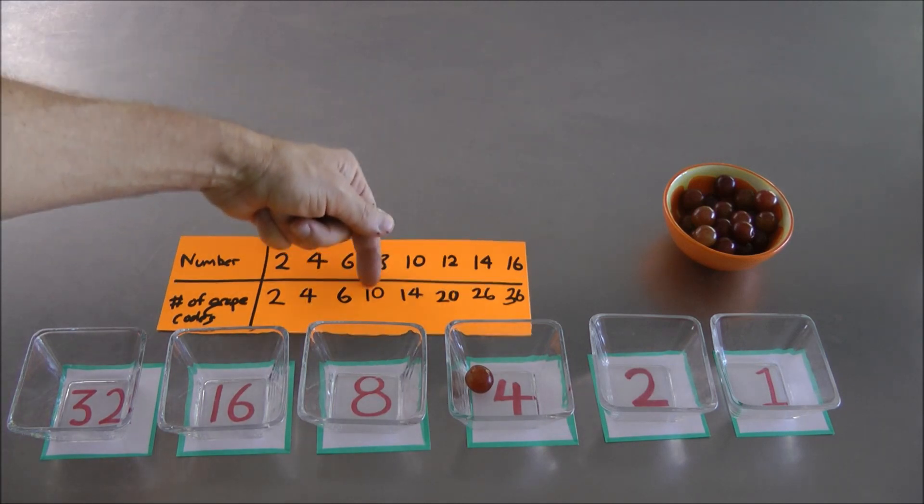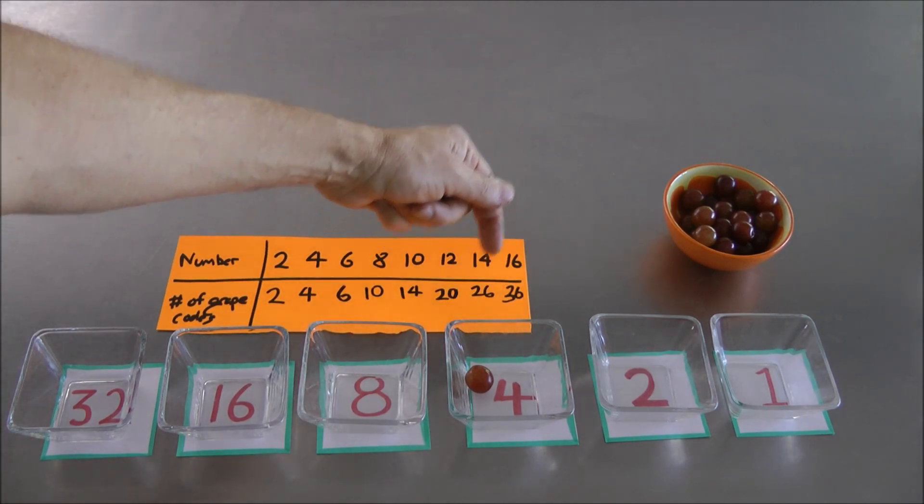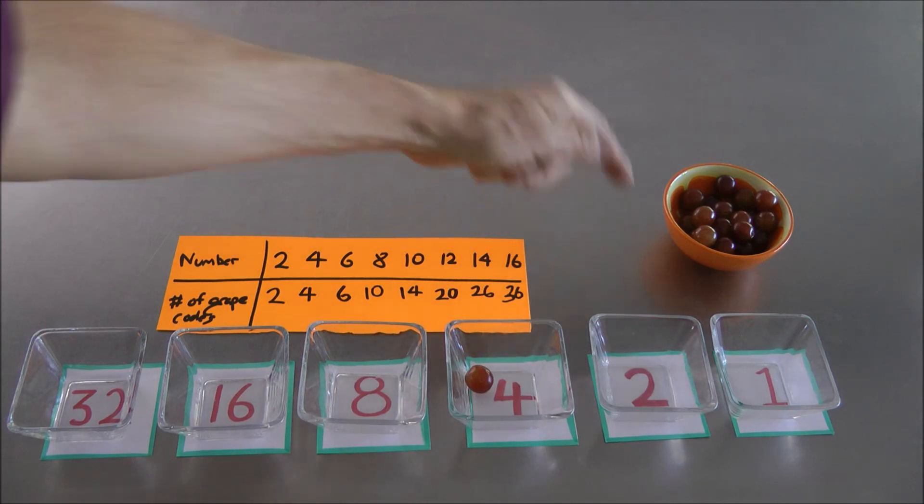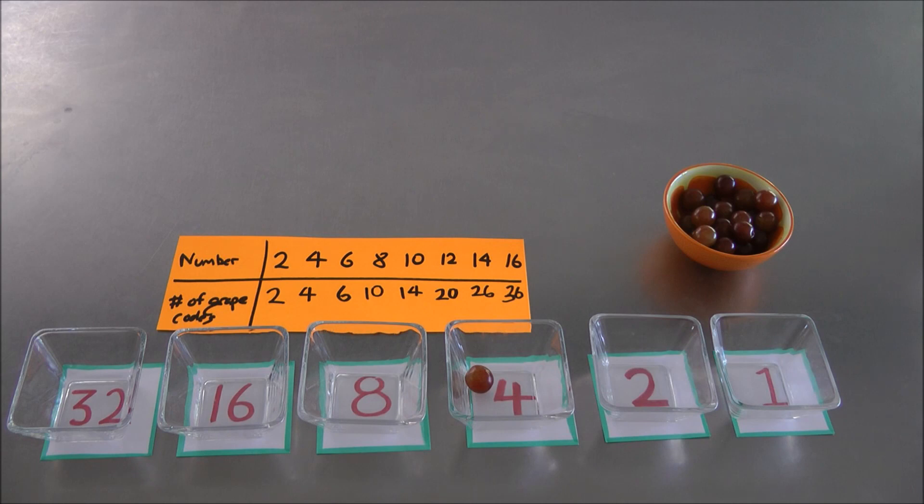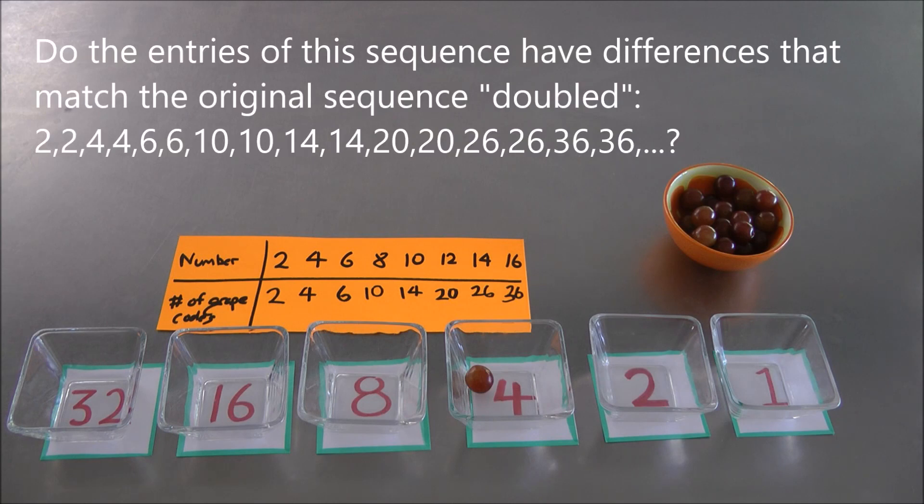Up by 2, up by 2. Up by 4, up by 4. Up by 6, up by 6. Up by 10, up by 10. Up by 14, up by 14. Up by 20, up by 20. Wouldn't that be marvelous if that's true? Because that would then give us a means to actually keep going with this table with some relative ease.